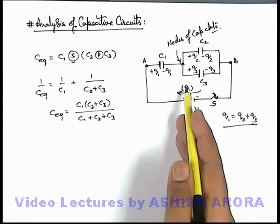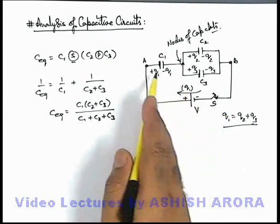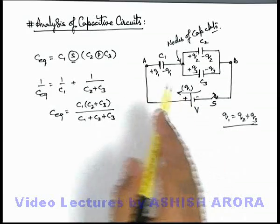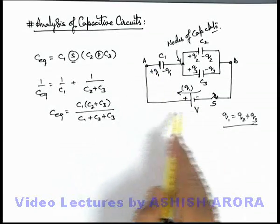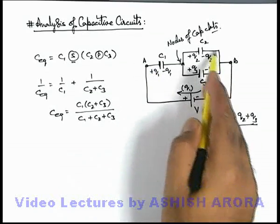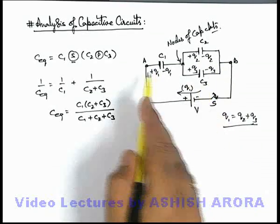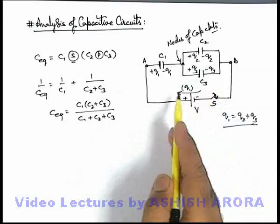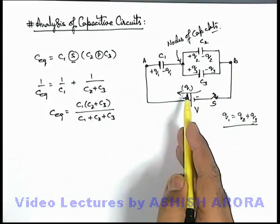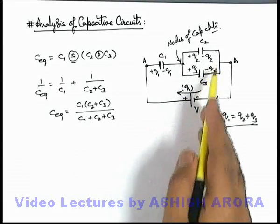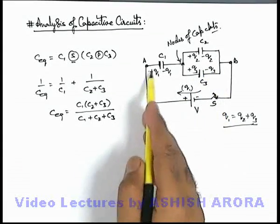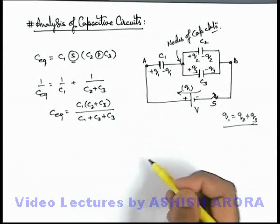Such kinds of junctions we call nodes of capacitive circuits. At such nodes, the sum of all charges will always be zero: Q2 + Q3 - Q1 = 0, so simply Q1 = Q2 + Q3. We can also state it as: the battery has pulled electrons from one plate and placed them on these 2 plates, so the sum of these charges must always be the same.